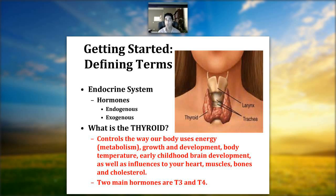What is a thyroid? The thyroid gland sits right in front of the throat and controls the way our body uses energy — what we refer to as metabolism — as well as growth and development, body temperature, childhood brain development, and influences on our heart, muscle, bone, and cholesterol.